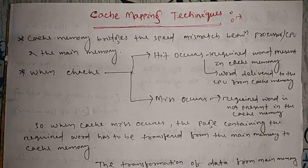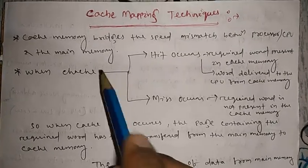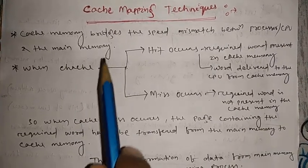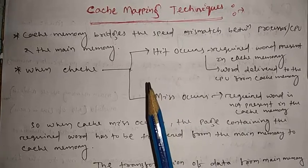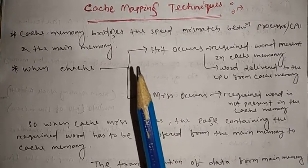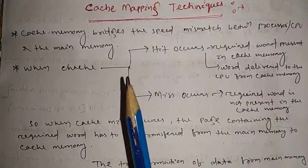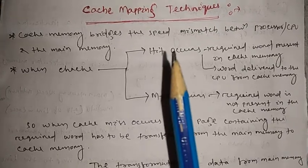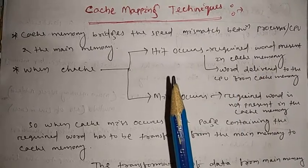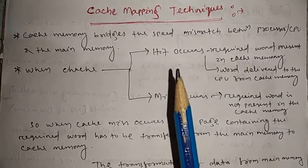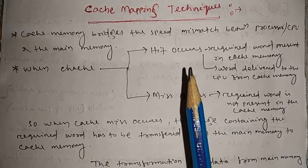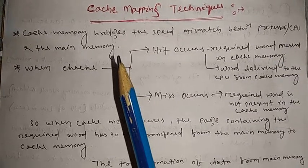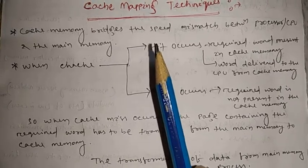Next is the cache mapping technique. Cache mapping technique means what — cache memory bridges the speed mismatch between the processor or CPU and the main memory. Cache memory is present in between the main memory and the processor. Whatever information is required by the CPU, you always go to cache memory, because if you go to main memory, the waiting time increases. So to match the speed, we use cache memory.